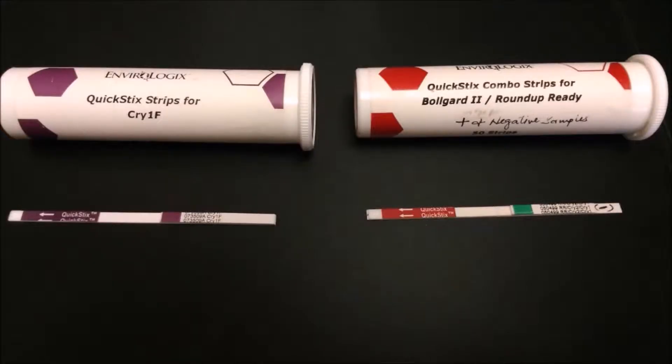The strips are selected according to specific proteins like CRY1F, BOLLGARD2 or Roundup Ready. For this demonstration, a strip for the detection of CRY1F protein will be used.